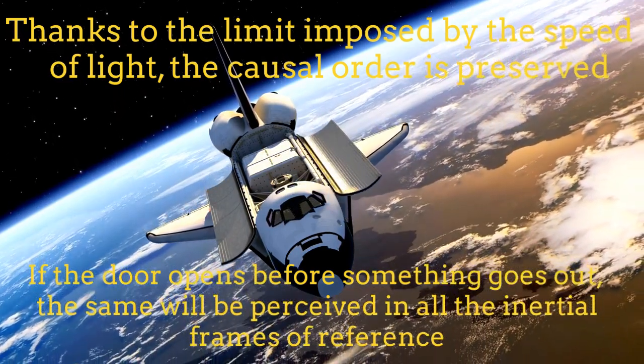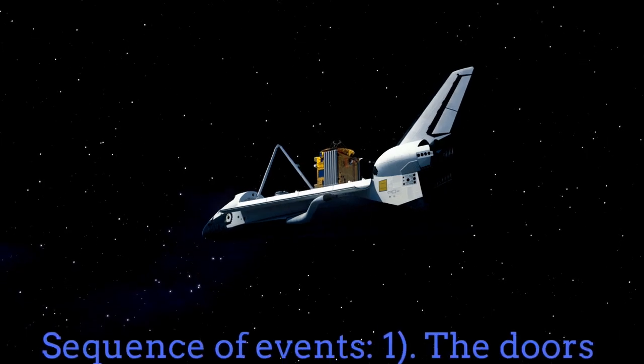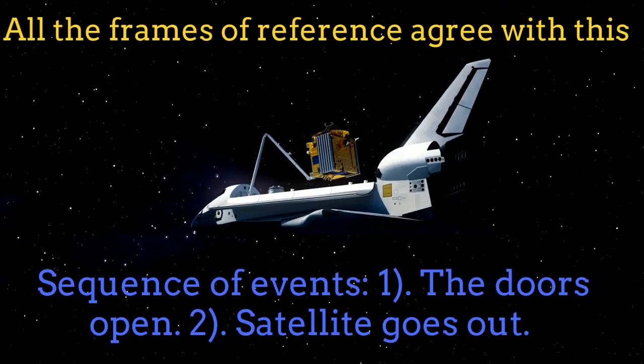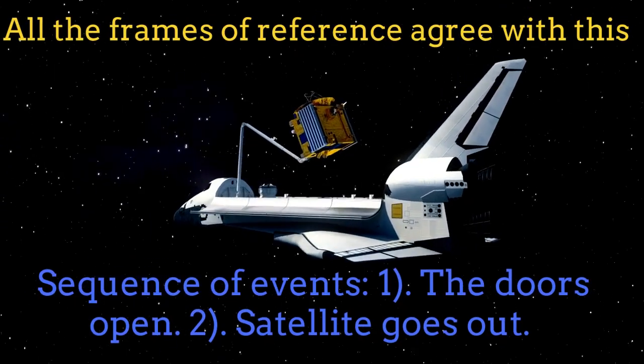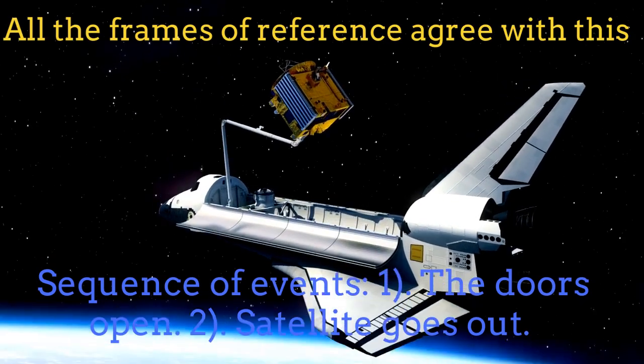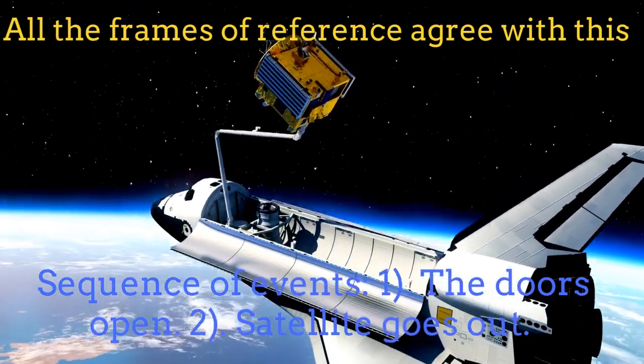For example, if the spaceship opens its doors before the satellite goes out, all inertial observers will agree on the sequence of events: first, the doors open; second, the satellite goes out.